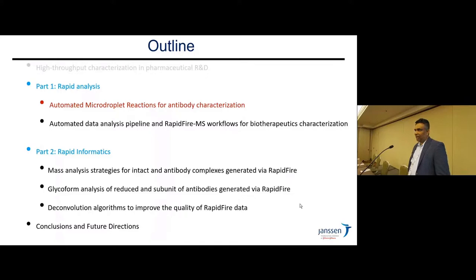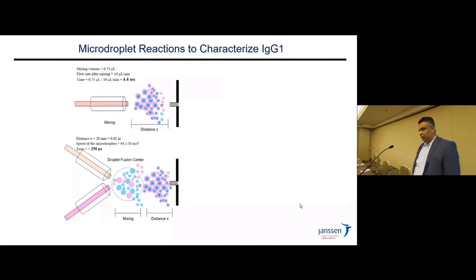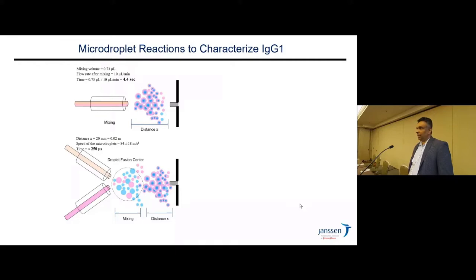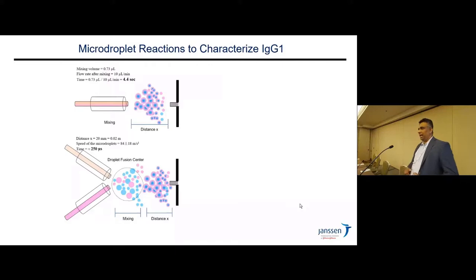One way to improve sample preparation is to perform micro droplet reactions to characterize antibodies. We've collaborated with academic groups to facilitate these accelerated reactions in droplets. In a typical mass spectrometry experiment we produce finer droplets of the electrospray. We mix the antibody with the enzyme of interest and can perform these micro droplet reactions in roughly four seconds through mixing at a T-junction. In a second example, two streams — one with the antibody and one with the enzyme — are fused in a droplet fusion zone.